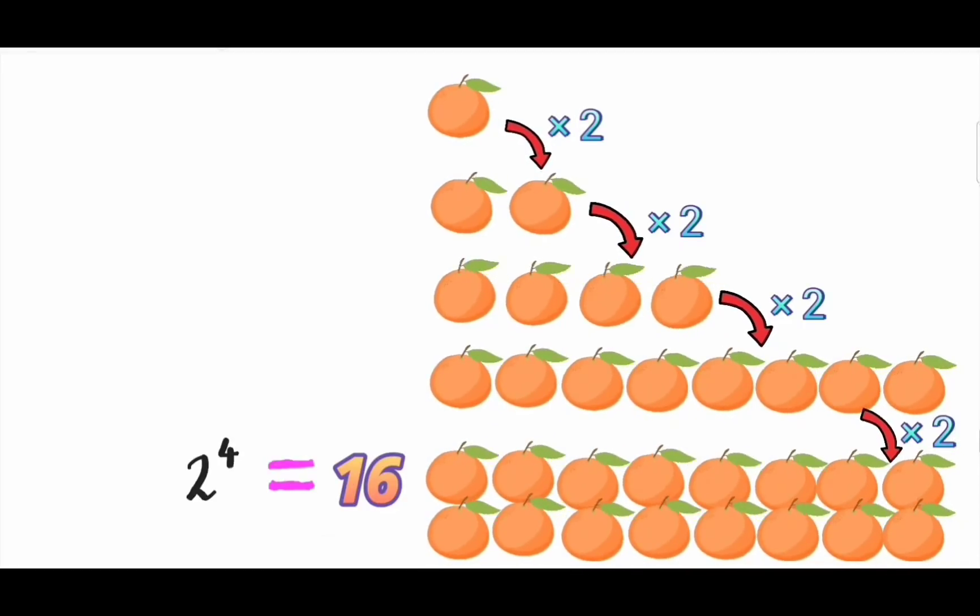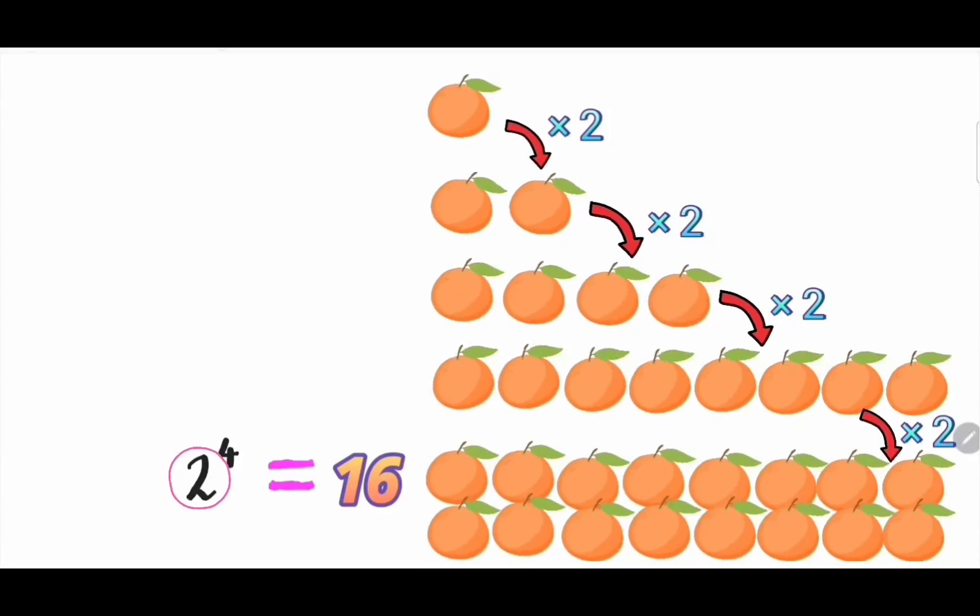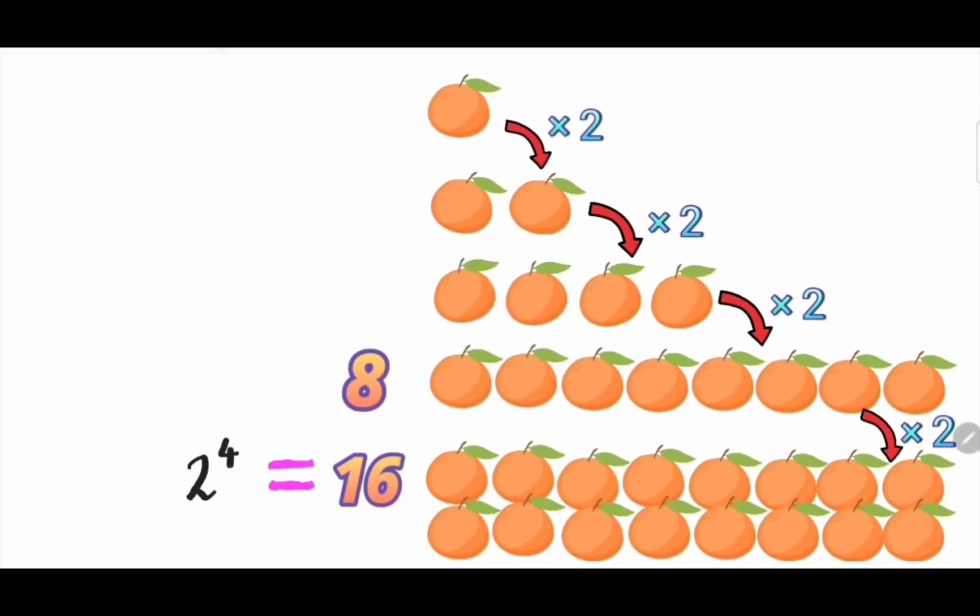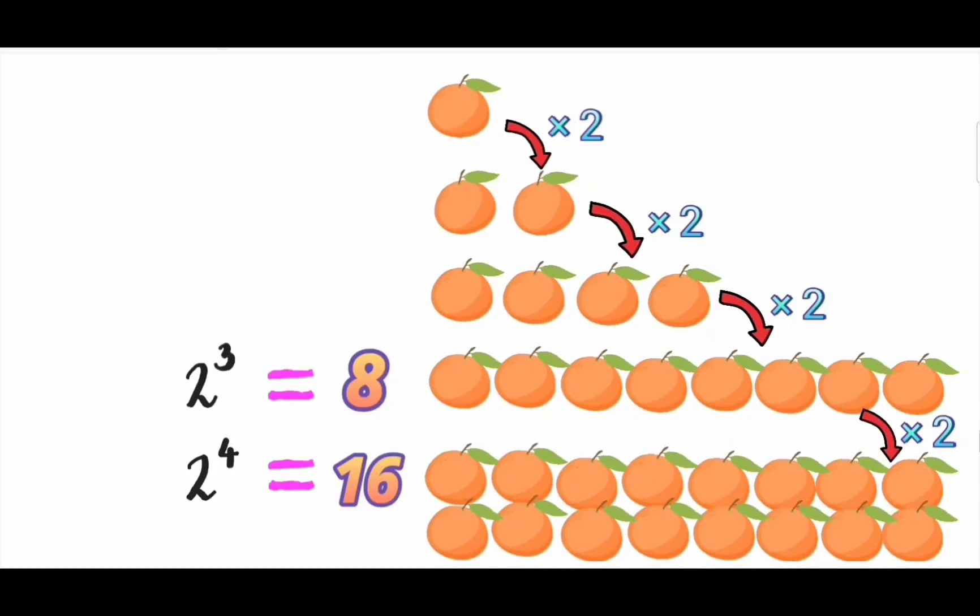I repeat, you got this by doubling an orange 4 times successively. Then 8. You can write this in exponential form 2 power 3. Because you double an orange 3 times successively, right?